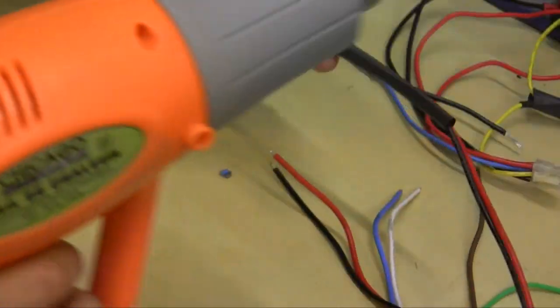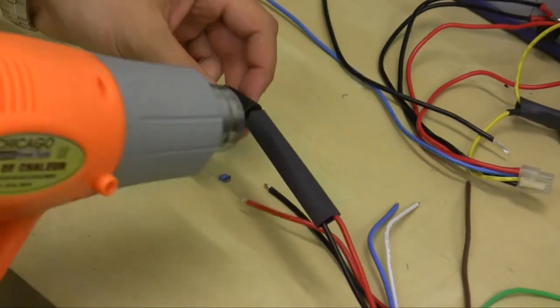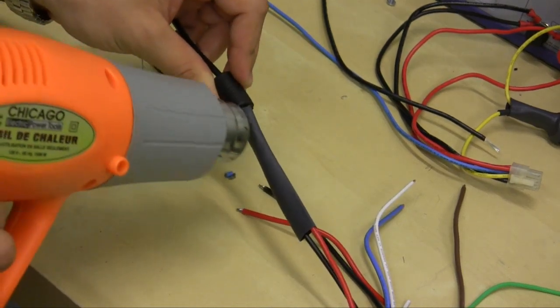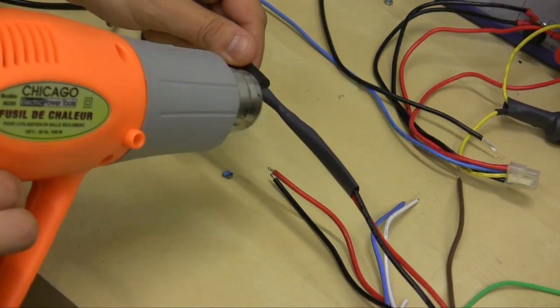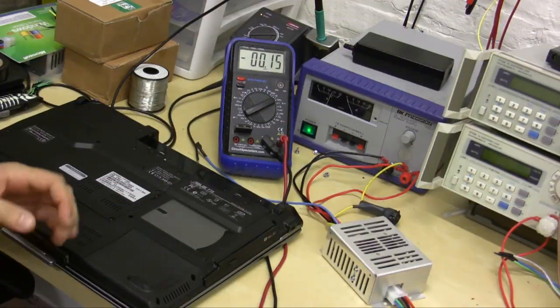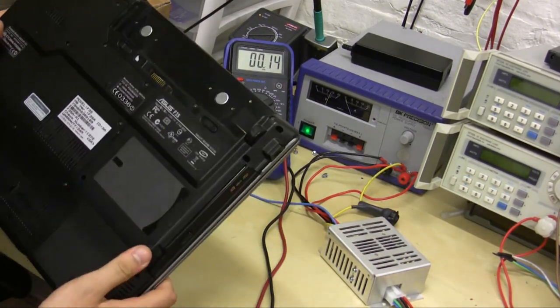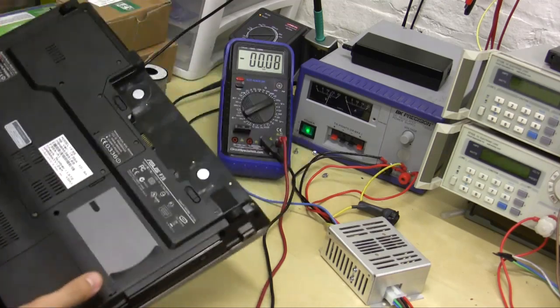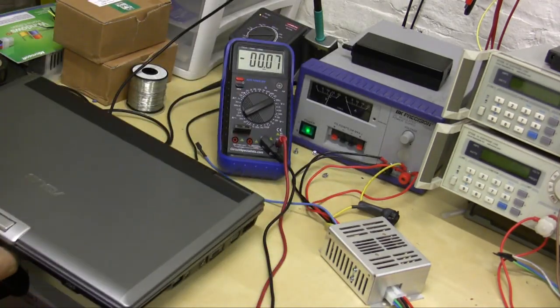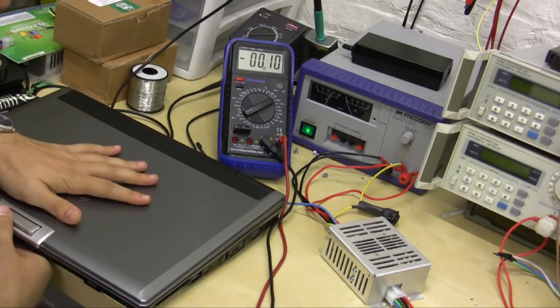So take out that larger shrink tubing piece and kind of pull it over. Okay, so for the last step in the process, just to show you. So we've taken the battery out of the laptop so it doesn't have power in one minute. So that's that.